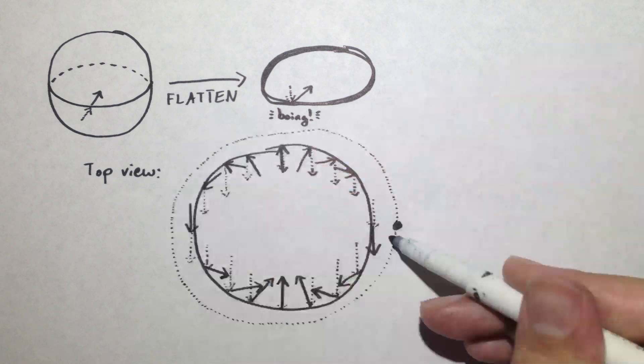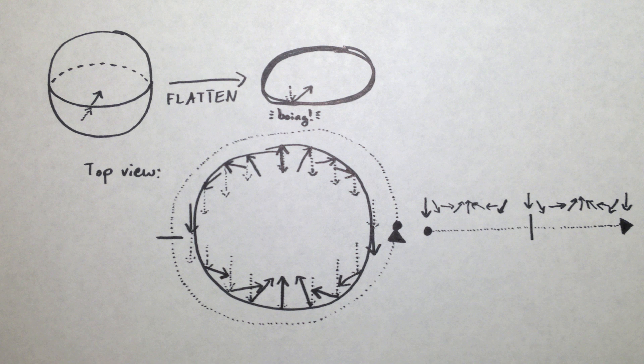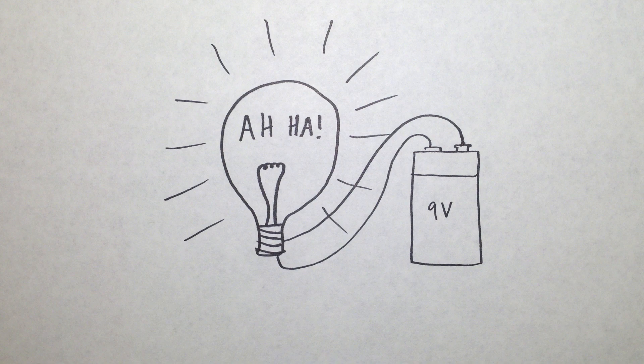But hold on. We know from before that if the vector field is non-zero everywhere on the top disk, then the winding number would be zero. So there's a vector of length zero somewhere on the top hemisphere.